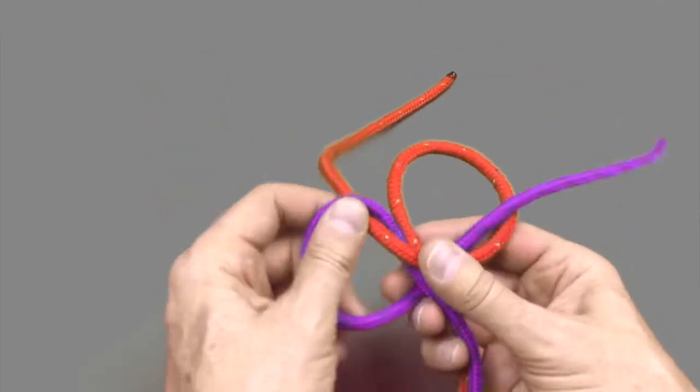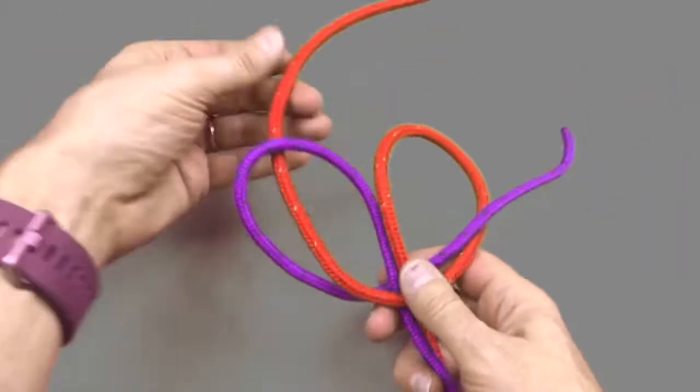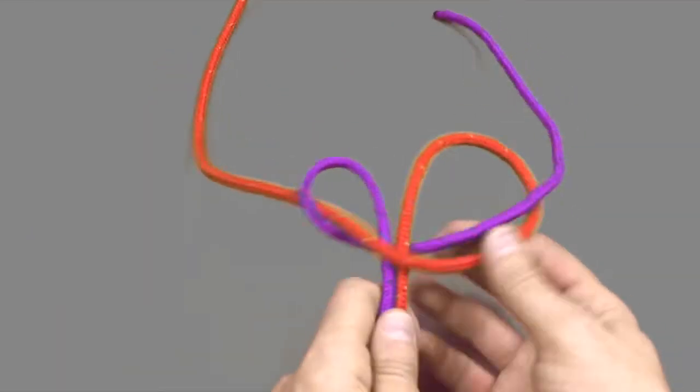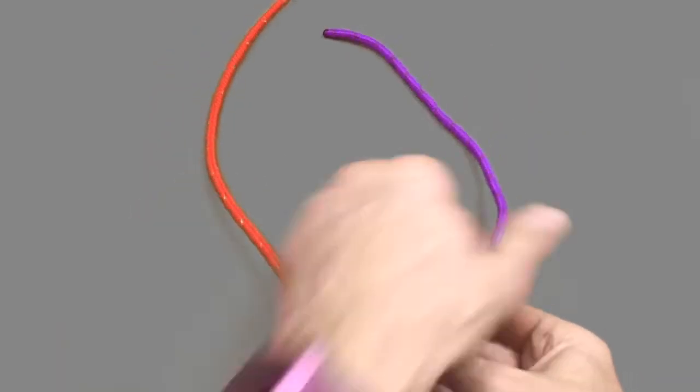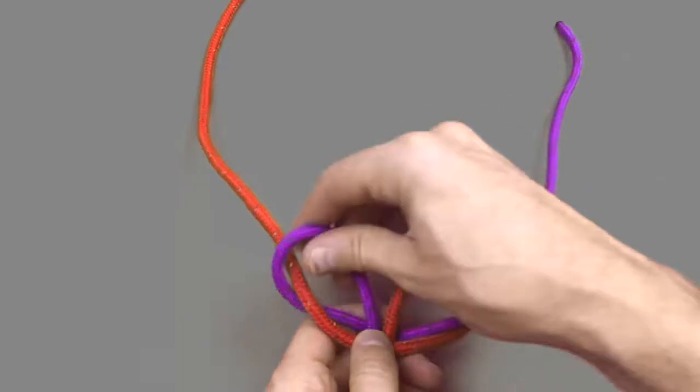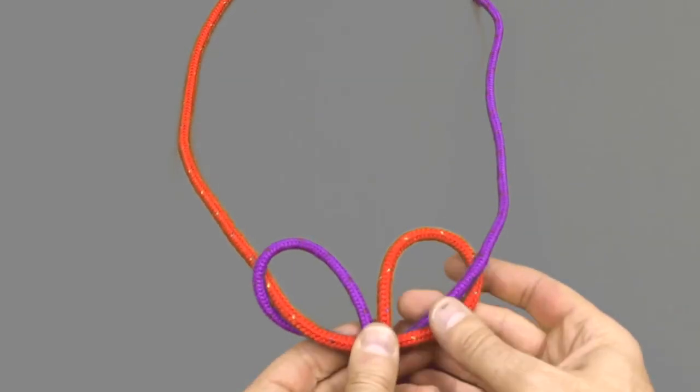This completes the first wall knot. What you want to do now is just tidy it up, moving the loops around and pulling the tails through until you get the knot in the position shown here.